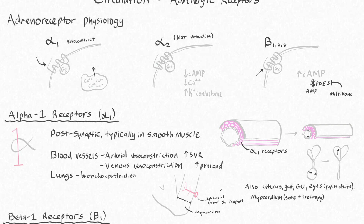In fact, an alpha-1 agonist is often the best way to increase your myocardial perfusion. Remember that your left ventricular perfusion is determined by your diastolic blood pressure — the pressure in your aortic root that's forcing blood down the coronary arteries and through these epicardial vessels — minus the left ventricular end-diastolic pressure, or the pressure left in this heart chamber during diastole. So sometimes the best way to increase LV perfusion is to use an alpha-1 agonist to increase diastolic blood pressure.